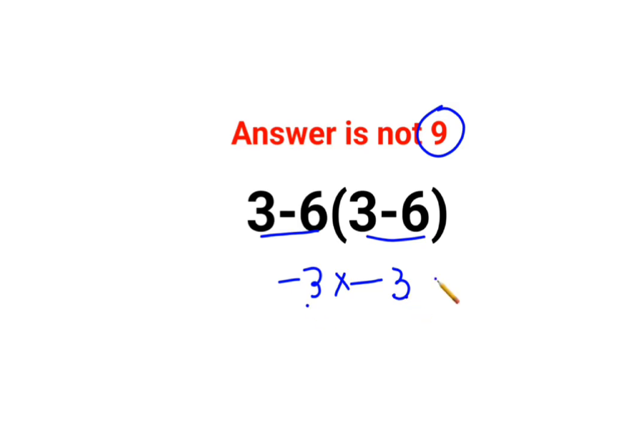So minus 3 multiplied by minus 3. Two negatives when get multiplied you answer get as a positive. This would have been correct if the question had a bracket in this case as well.